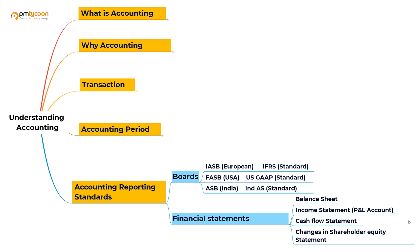Boards create standards for their own countries — specifying which financial statements to record and produce, and whether to report quarterly, half-yearly, or annually. For example, European countries follow a board called IASB, which stands for International Accounting Standards Board, and the standard they follow is called IFRS.